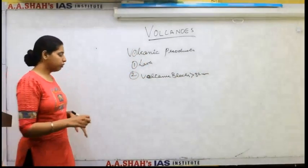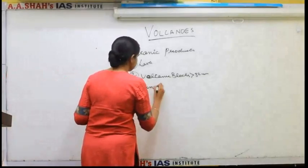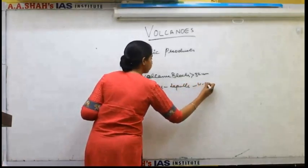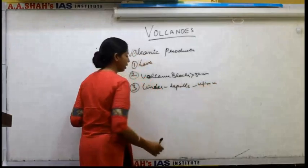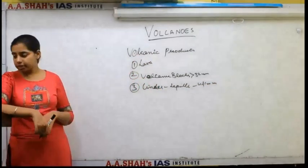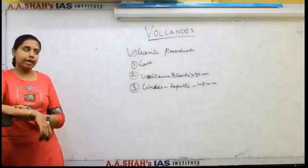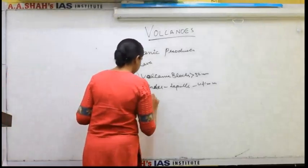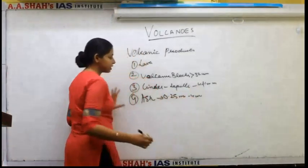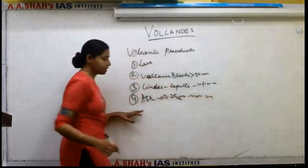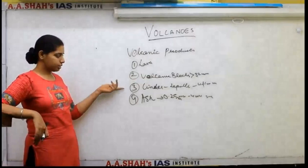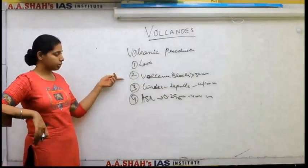If the particle size is between 4 to 11 mm, it is known as cinder or lapilli. Cinder or lapilli is between 4 to 11 mm in diameter. If the particle size is between 0.25 mm to 4 mm, it is known as ash. And if it is less than 0.25 mm, it is known as fine ash. So ash has a smaller size than cinder or lapilli, and cinder or lapilli has a smaller particle size than volcanic blocks.